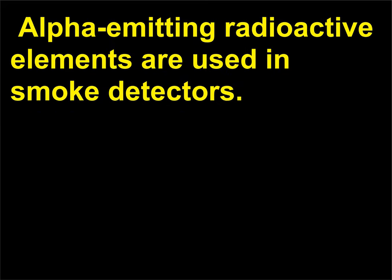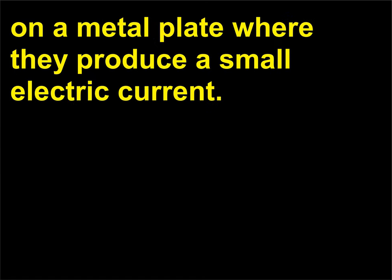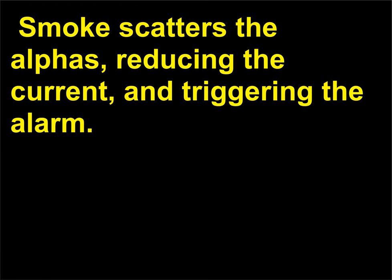Alpha-emitting radioactive elements are used in smoke detectors. The charged alpha particles leaving the element are collected on a metal plate where they produce a small electric current. Smoke scatters the alphas, reducing the current and triggering the alarm.